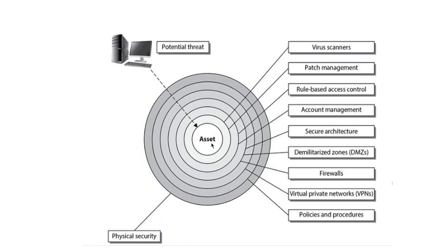The first layer is wire scanners. You have to ensure that the wires are properly scanned, covering incoming files and emails. The next layer is patch management — you have to apply patches regularly for software that has vulnerability updates.